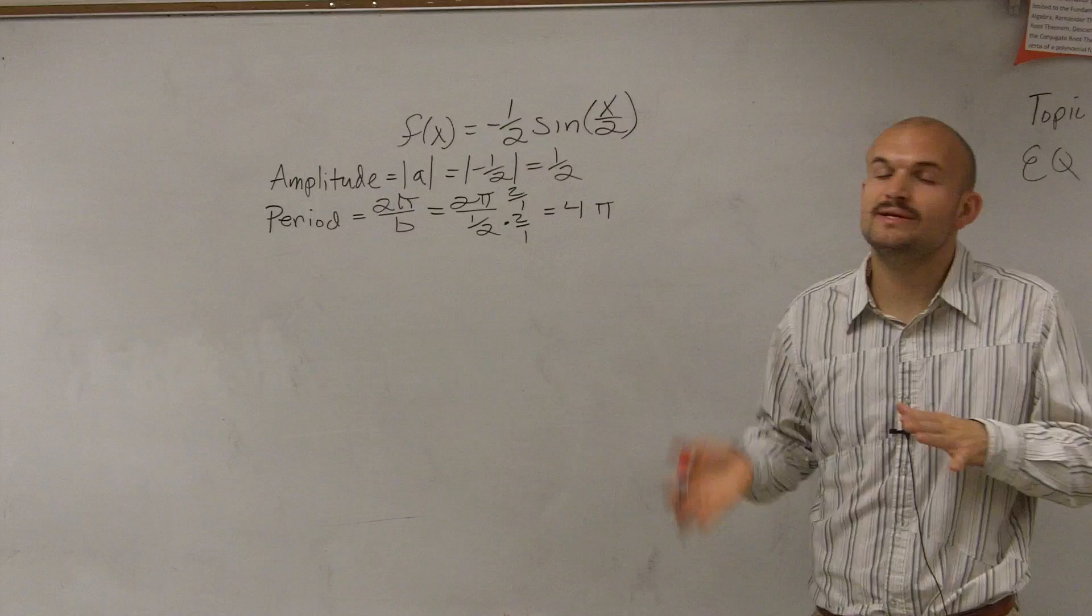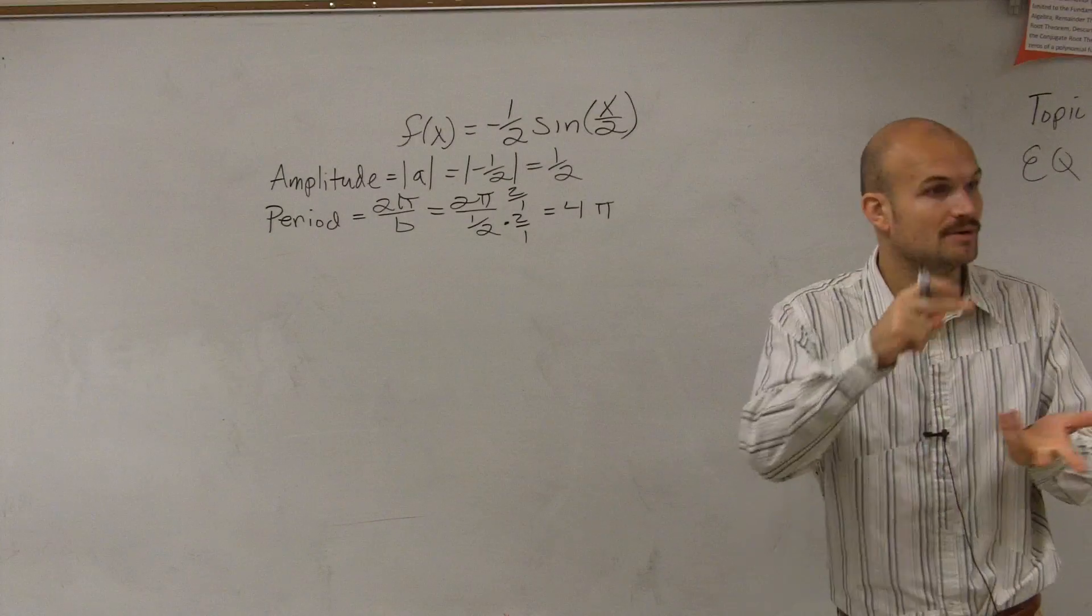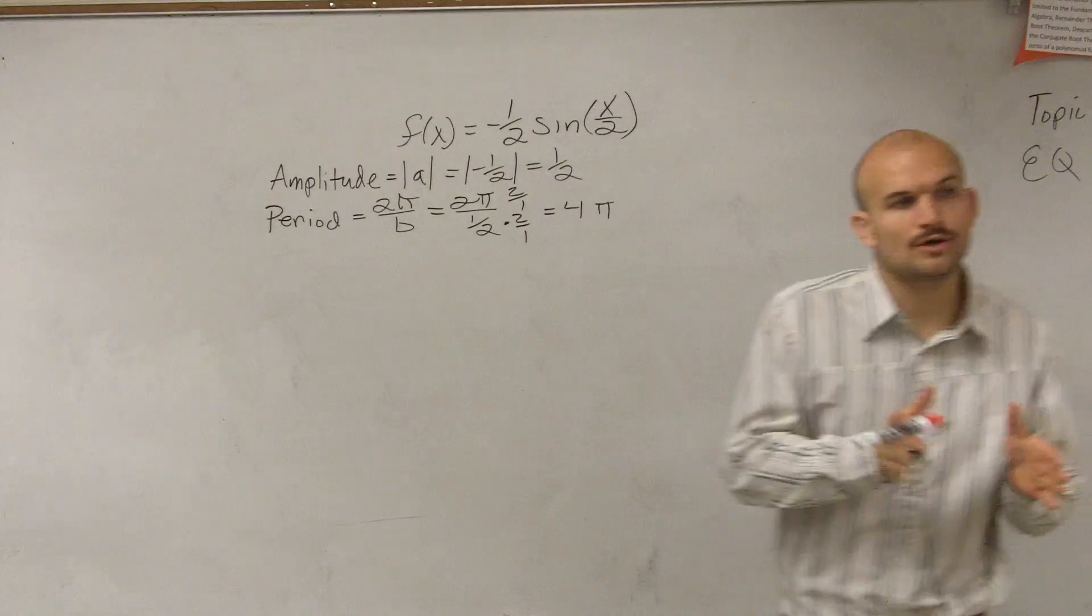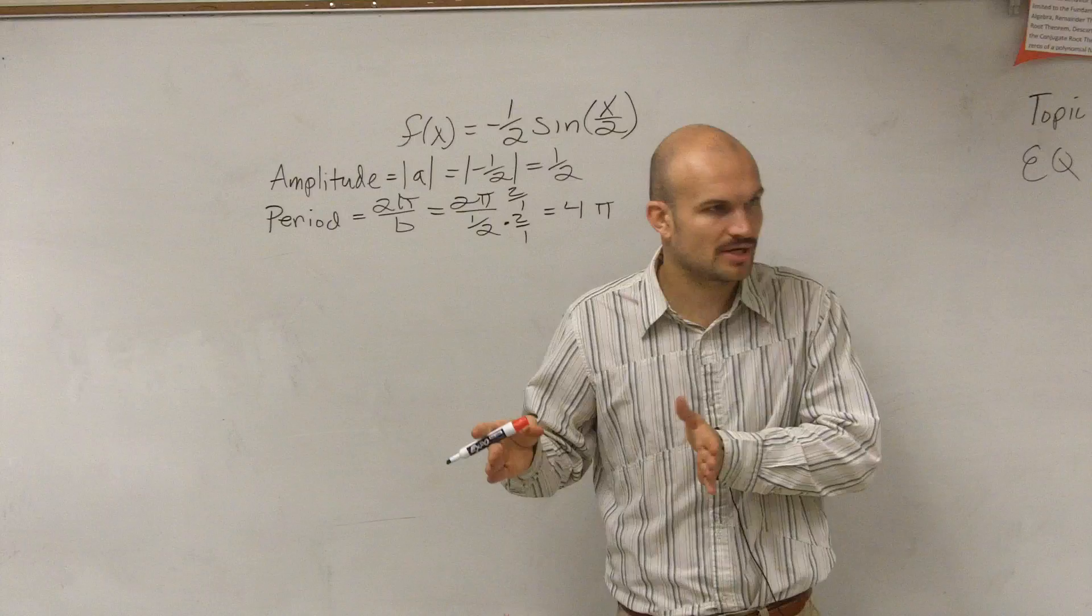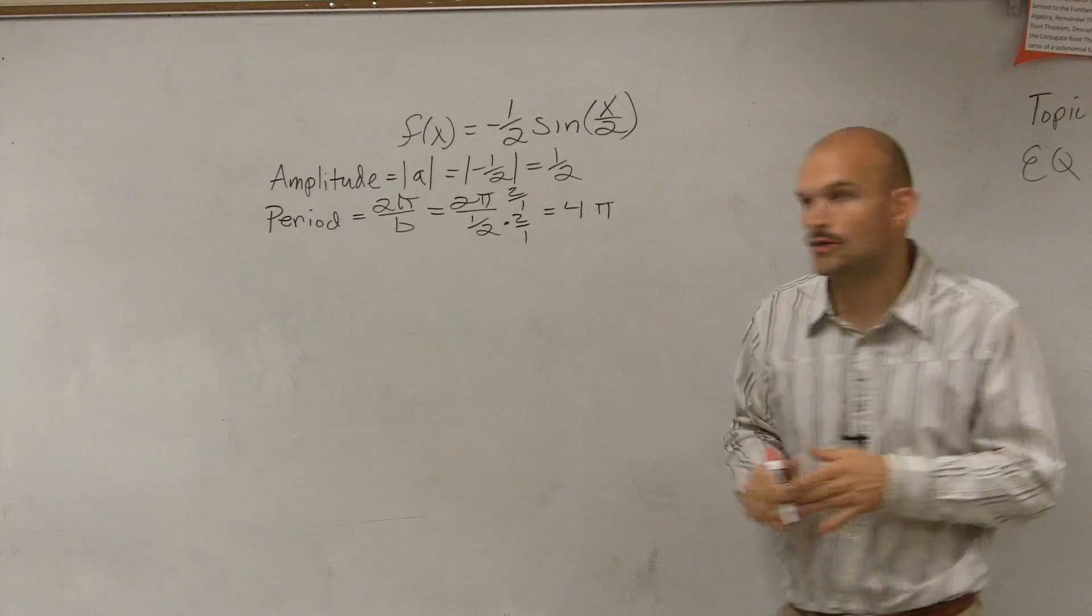Now, the next thing, if you guys remember, when we did our parent graph, we talked about critical points. Remember, there was the maximum, there was the minimum, and there were x-intercepts, correct? Well, all of our critical points are equal distances from each other. So what I want to do is I want to find that distance between each critical point.